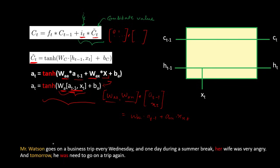Consider the sentence: 'Mr. Watson goes on a business trip every Wednesday and one day during the summer break her wife was very angry and tomorrow he was needed to go on a trip again.' This should be 'his' and 'will'. When the model reaches the word 'tomorrow', it needs to add that information along with whatever it had before. This is an example where we do not need to forget anything but are just adding new information while retaining the useful information we already had.